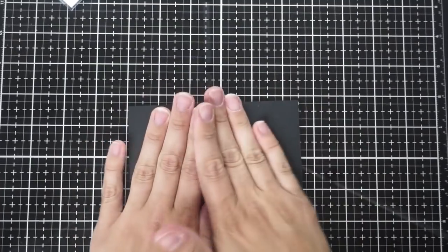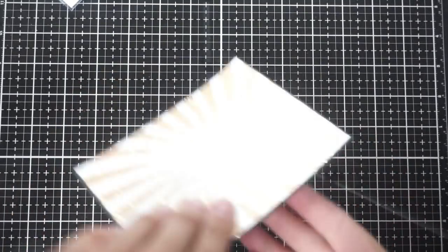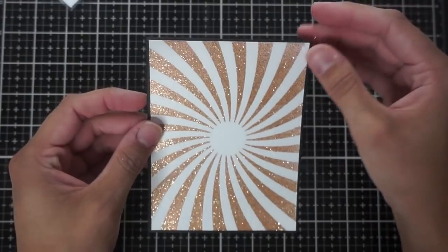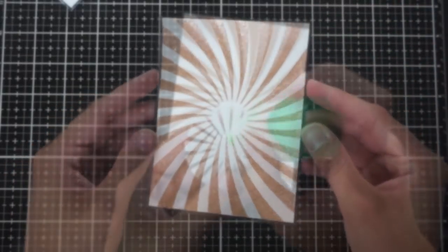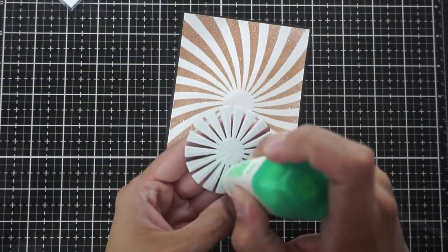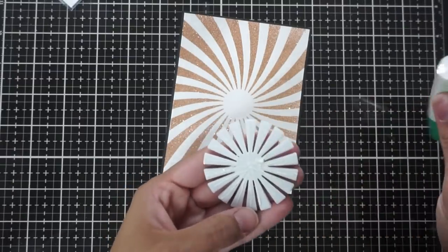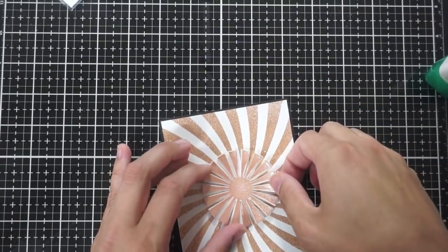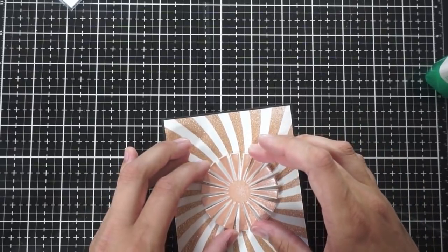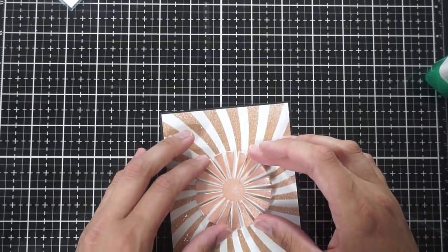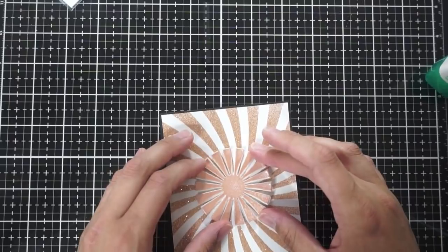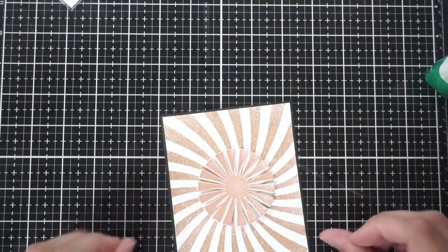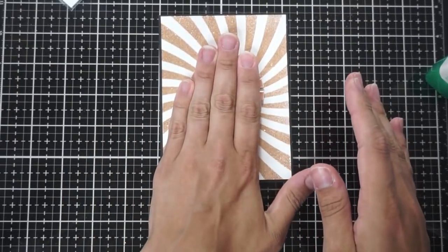I'm going to do the same thing on the card base in just a moment but first I want to finish the card front so I'm going to take that Starburst die cut that I have adhered to the craft foam and I'm going to adhere that right to the center there and then you get this really cool sort of spirally sun look and I love it so much.